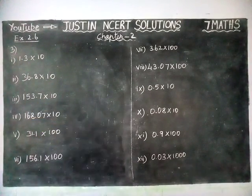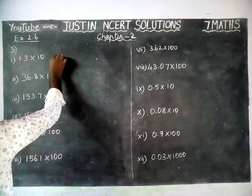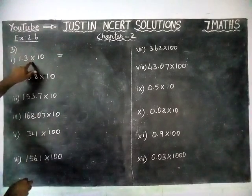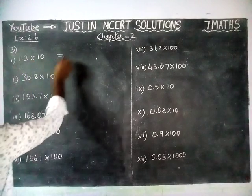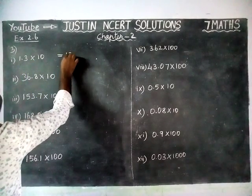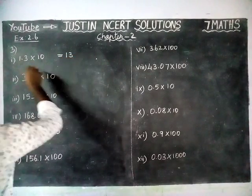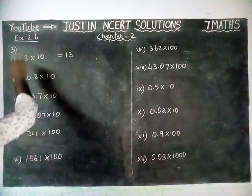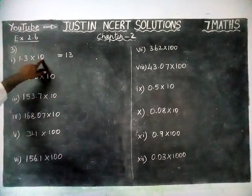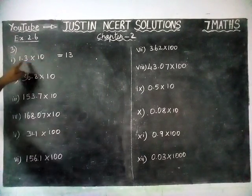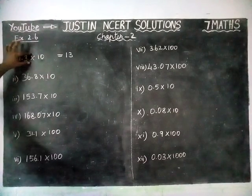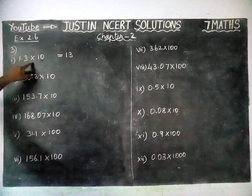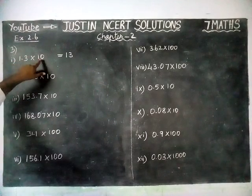First, the rule: when we are multiplying a number with 10, we have to move one digit to the right side, because there is one zero. According to the number of zeros, we have to move right side that many steps.